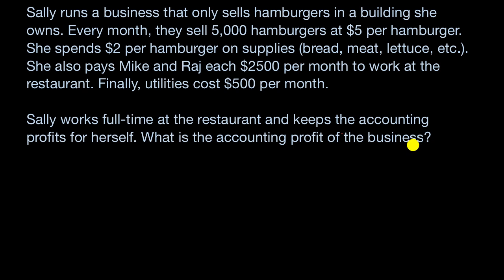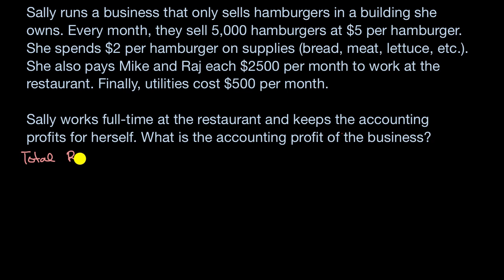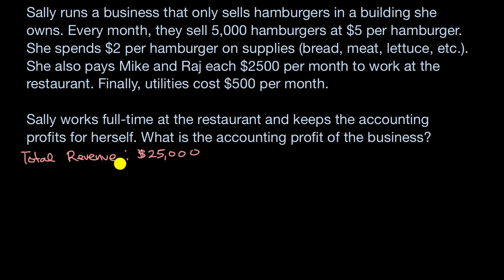Now let's think about this together in terms of the types of costs we've considered before. When we think about benefits to a firm — and here it's fully owned by Sally — the benefit to a firm of doing business is its revenue. Her total revenue is price times quantity: 5,000 hamburgers at $5 per hamburger, so that is $25,000 per month. We can view this as the total benefit that her business is getting.